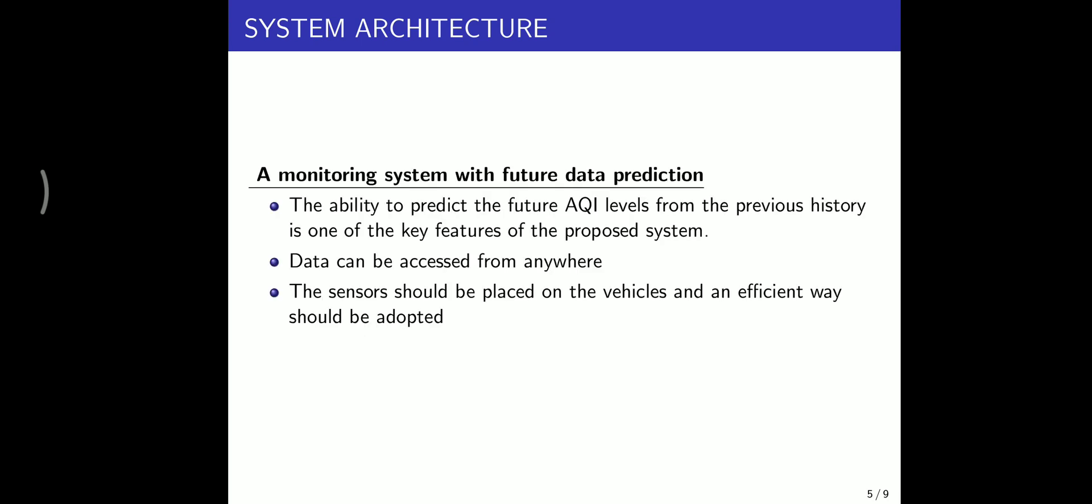A monitoring system with future data prediction. The ability to predict the future AQI level from previous history is one of the key features of our system. Data can be accessed from anywhere. The sensors should be placed on vehicles or on lamp posts, and this is an efficient way we adopt.